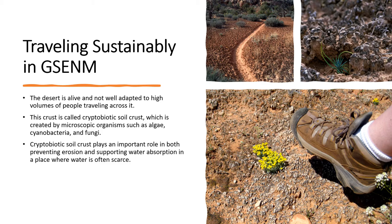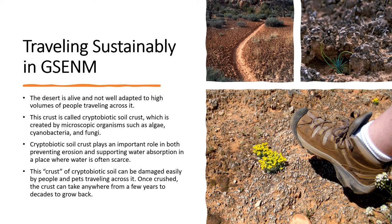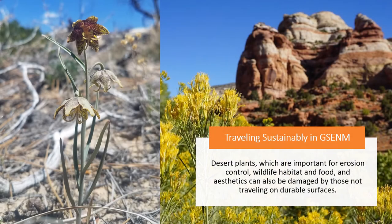Cryptobiotic soil crust plays an important role in preventing erosion and supporting water absorption in a place where water is often scarce. This crust can be damaged easily by people and pets traveling across it. Once crushed, it can take anywhere from a few years to decades to grow back. Until recovery, the soil in the impacted area can be damaged by accelerated erosion and nutrient loss. Desert plants — which are important for erosion control, wildlife habitat and food, and aesthetics — can also be damaged by those not traveling on durable surfaces. When people go off designated trails and roads, they often leave tracks which can encourage others to follow their path and create more damage.